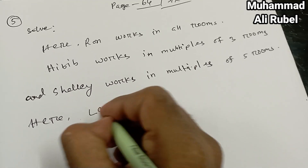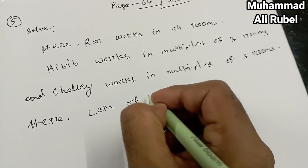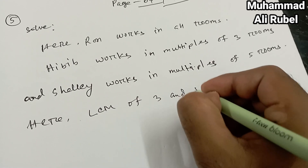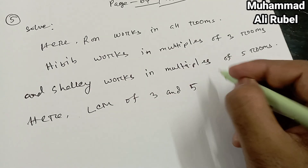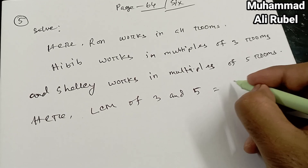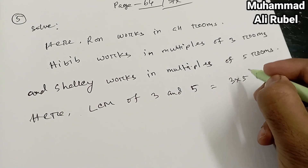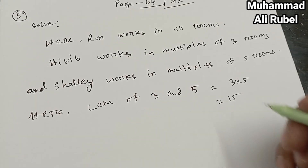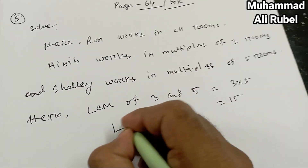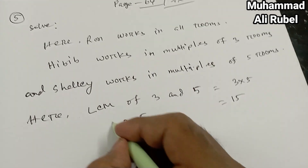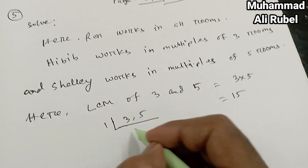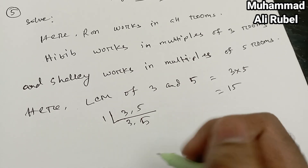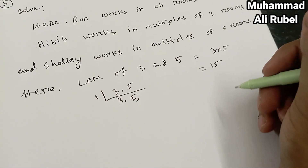Here, LCM of three and five equals — three and five, except one, we cannot divide except one — so three and five. The LCM of three and five is fifteen.